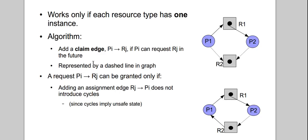Today we're going to be doing a Resource Allocation Graph algorithm, which is another deadlock avoidance algorithm. It's a graph-based approach where an arrow pointing towards a resource means a process is requesting that resource. The box represents the resource and the circle represents the process, so when the arrow from a process points to a square block, it means that process is requesting that resource.